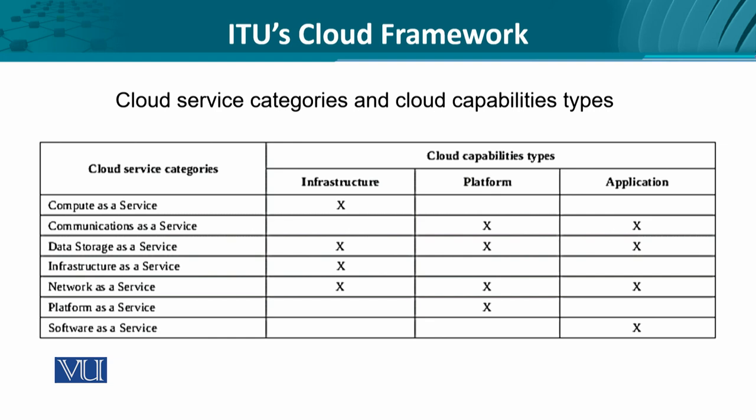Let's look at service categories and cloud capabilities type. Service categories could be computing as a service, communication, data storage, infrastructure, network as a service, platform, or software as a service. For example, compute as a service means only computing is required — no specific operating system or application — just the infrastructure, i.e., the processing power expected from the cloud. Network as a service and data storage as a service require incorporating infrastructure, platform, and application capabilities. The service categories determine which cloud capabilities the cloud provider must provision.